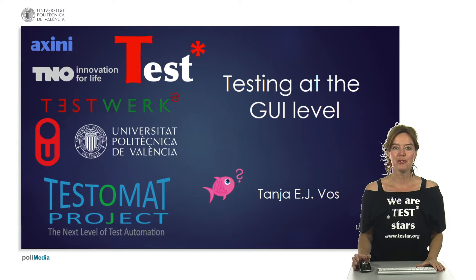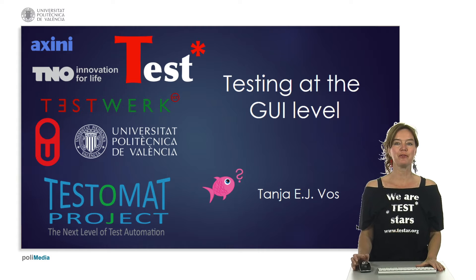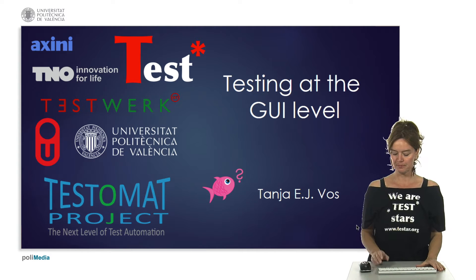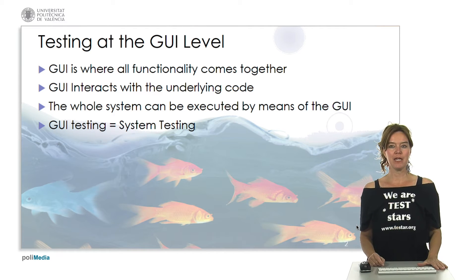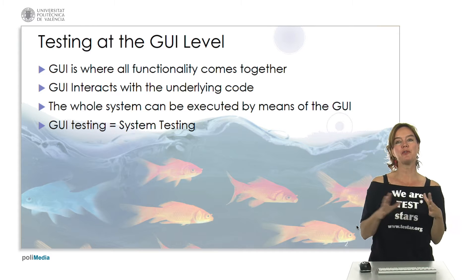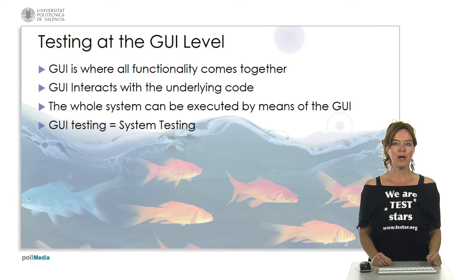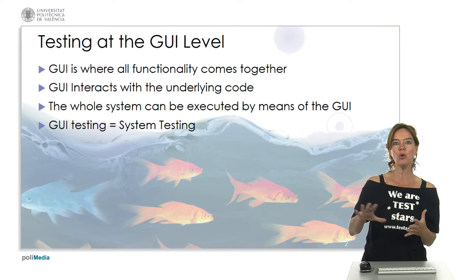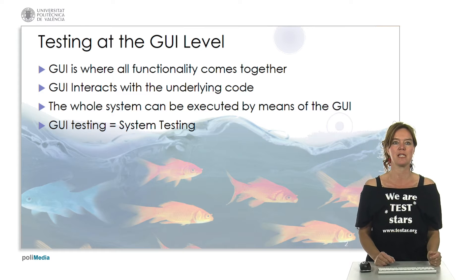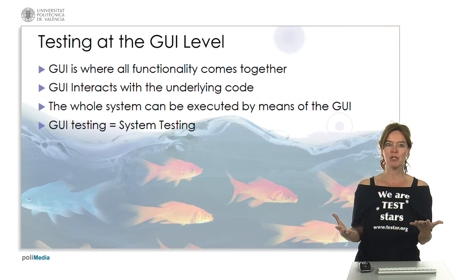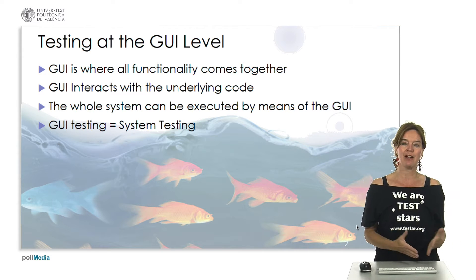Hello, my name is Tanja Vos and in this video I'm going to talk about testing at the GUI level, the graphical user interface level of a software application. Testing at the graphical user interface level is an important phase in testing because the graphical user interface is where all functionality of an application comes together. It's where the user interface interacts with all the underlying code while a user is exercising the functions on the user interface. So if we test at the user interface we can execute a whole system, and in that way GUI testing is kind of system testing.